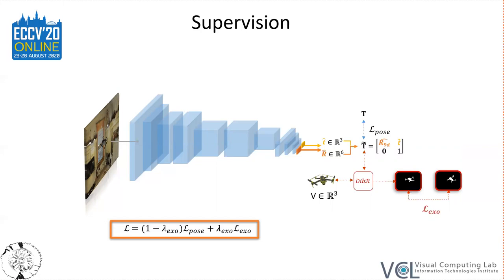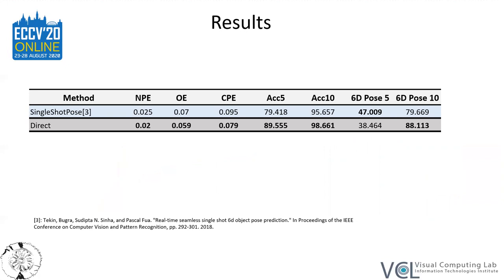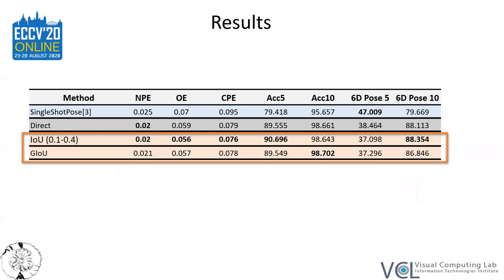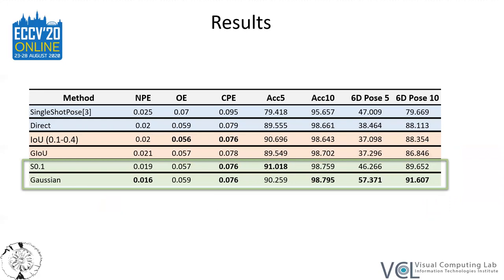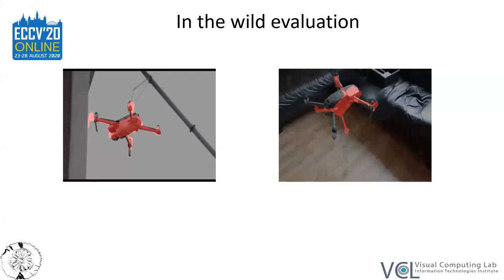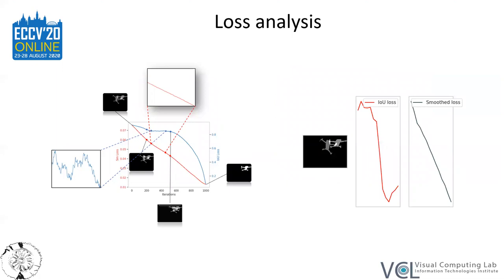Next, we present evaluation results in several metrics and compare our methods with another silhouette-based method which has shown state-of-the-art results in various pose estimation datasets. The addition of exocentric supervision enhances the performance of our methods, even when using typical losses like the IOU and the generalized IOU. We further demonstrate that the selection of a smoother objective for the exocentric loss gets better results in most of the metrics. Additionally, we provide qualitative results on data harvested from YouTube videos.